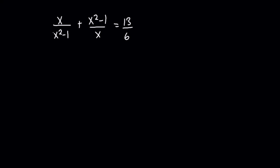I'm going to present two different approaches and we'll end up getting the same results. In the first approach, I'm going to find the LCM. In this case the LCM is simply the multiplication of the denominators of the fractions, so we get 6x(x²-1). I'm going to multiply through by 6x(x²-1).